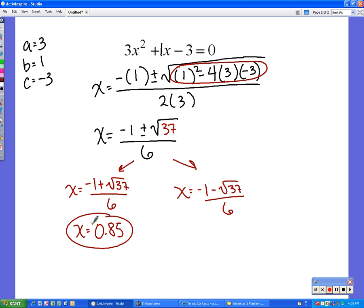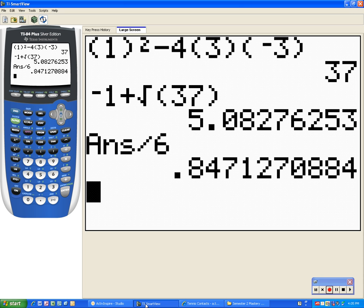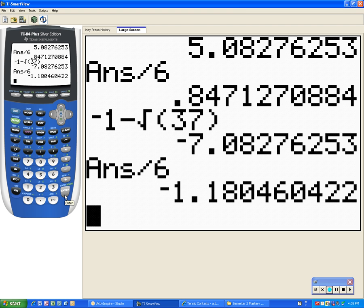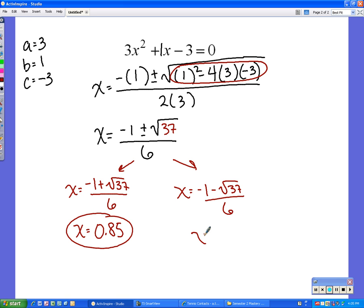I'm going to do the same thing, but negative 1 minus the square root of 37. Negative 1 minus the square root of 37, enter. Then, divide by 6. Enter. Negative 1.18 is the answer there. x equals negative 1.18.